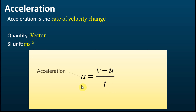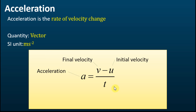Acceleration can be calculated using the formula a = (v − u) / t, where a is the acceleration, v is the final velocity, u is the initial velocity, and t is the time taken for the change of velocity. So v minus u — final velocity minus initial velocity — is the change of velocity, and dividing by time tells us how fast the velocity changes per unit of time.